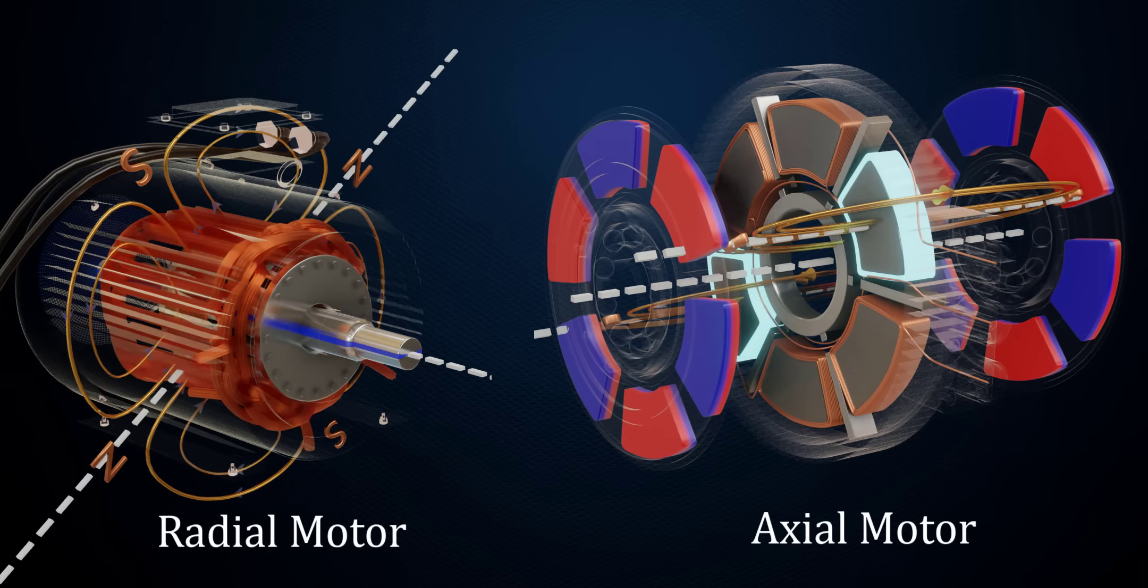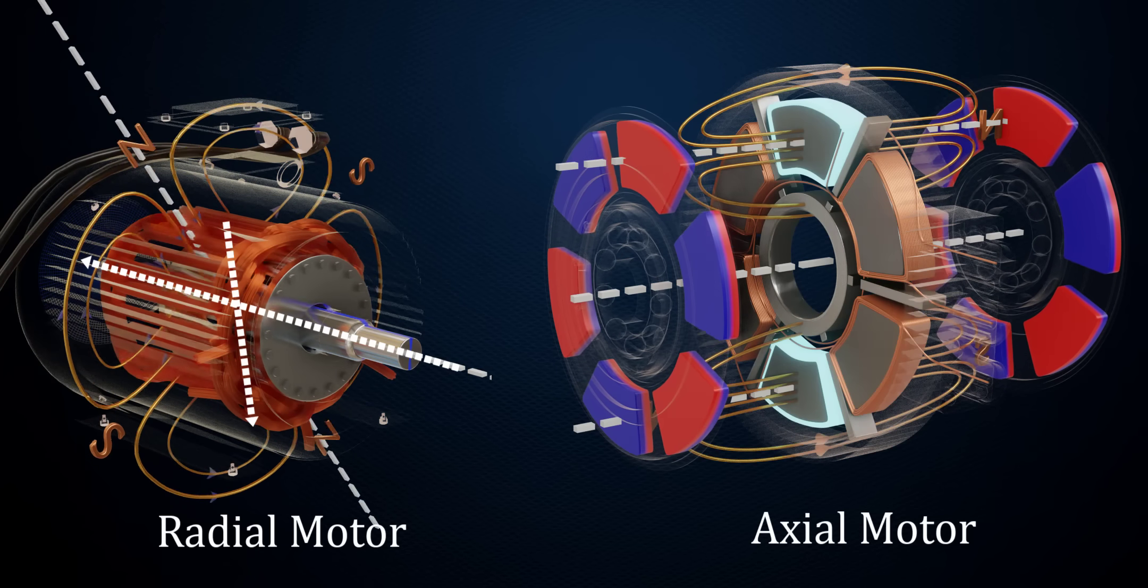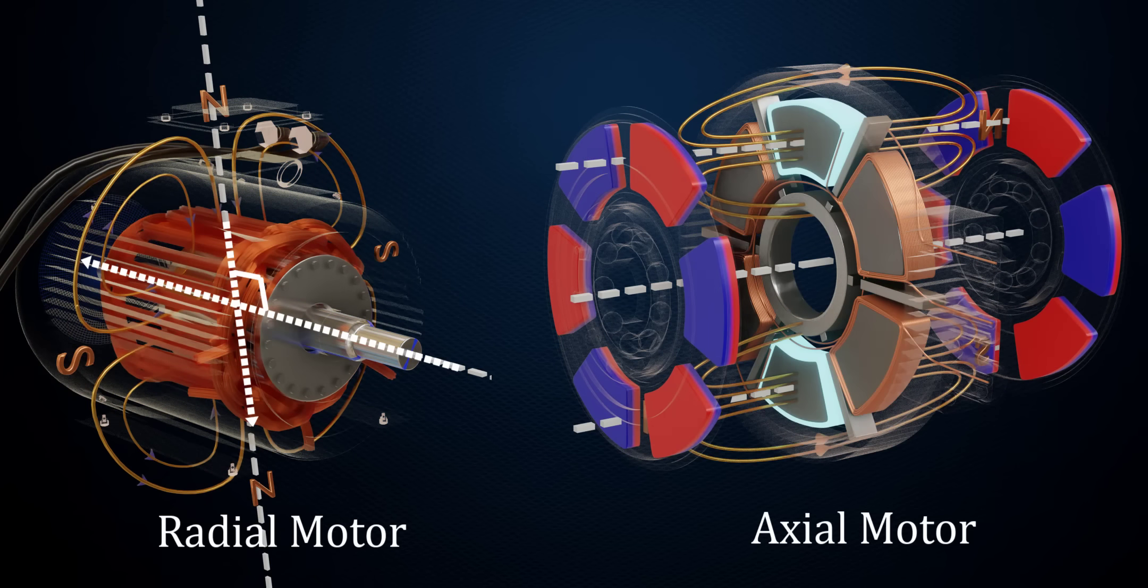In a radial flux motor, the magnetic flux is perpendicular to the axis of rotation. In an axial flux motor, the magnetic flux lines are parallel to the axis of rotation.